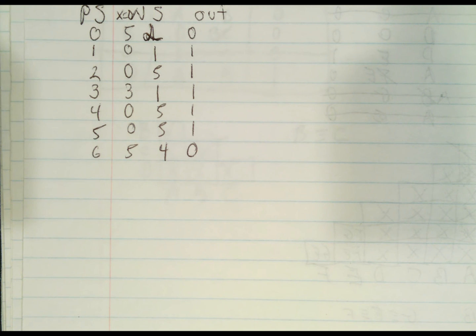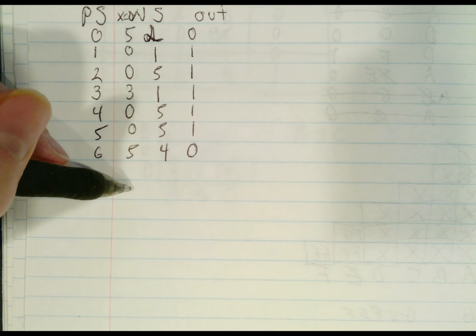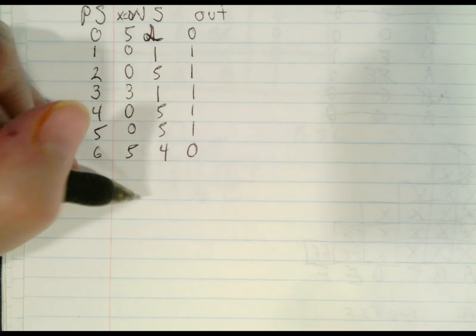Hi everybody. I just wanted to give you another example of the implicant chart. There's a way to label your charts with letters, but I thought it would be fun to try one where we're labeling the chart with numbers. So what we'll do is start with the second number, just like we started with the second letter from before, and we'll just number one through six horizontally.